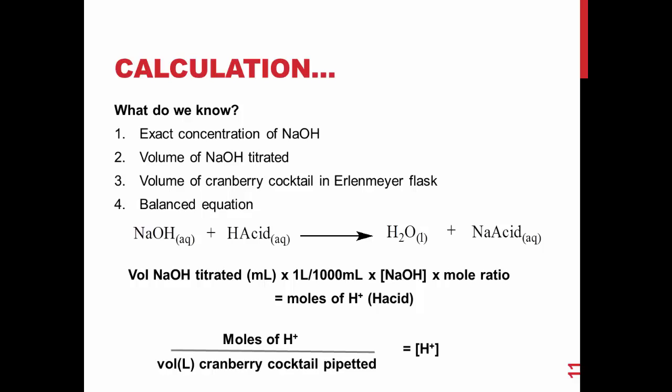To determine the concentration of hydrogen ions, you divide the moles of hydrogen ions by the volume in liters of cranberry cocktail that was pipetted. The concentration of hydrogen ions in solution is the acidity of the cranberry cocktail.